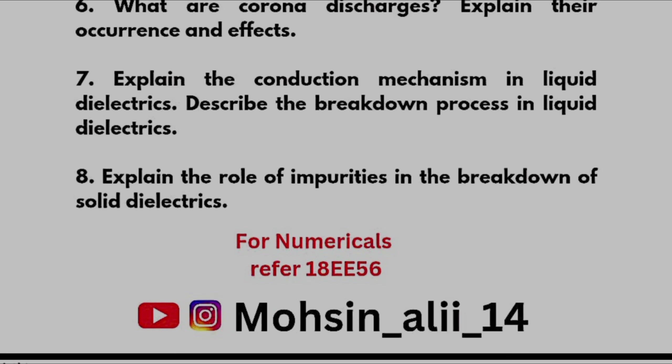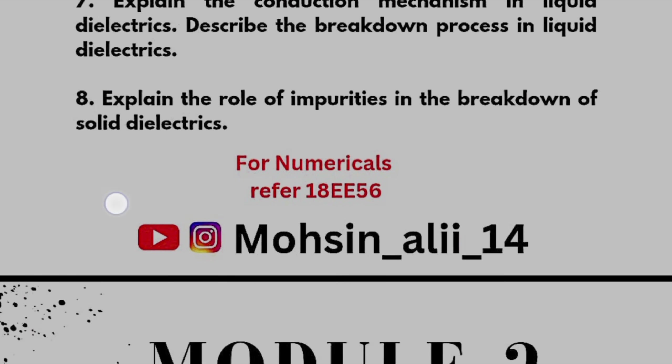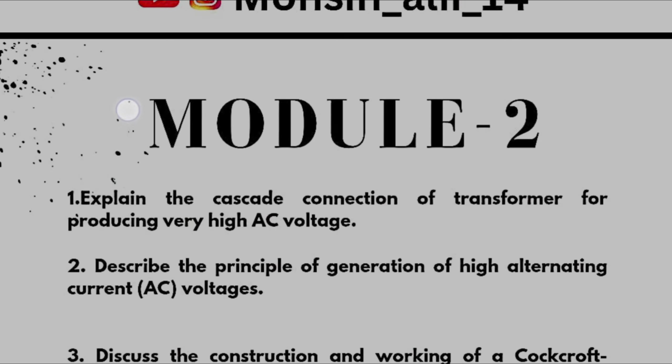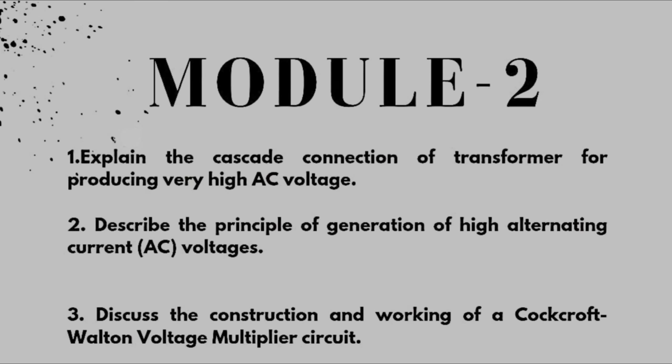As far as numericals are concerned, you have to refer the 18EE56 paper. If you do not have the 18EE56 paper, let me know in the comment section and I will provide the link. I will also upload these papers on my Instagram account. Now coming to Module 2, we have theoretical portions here.